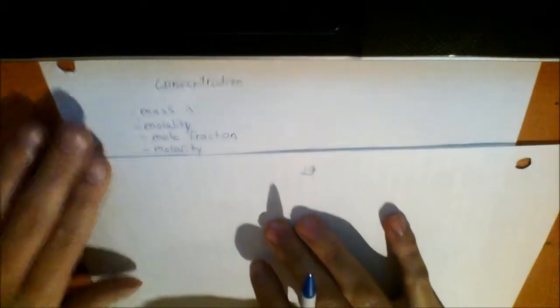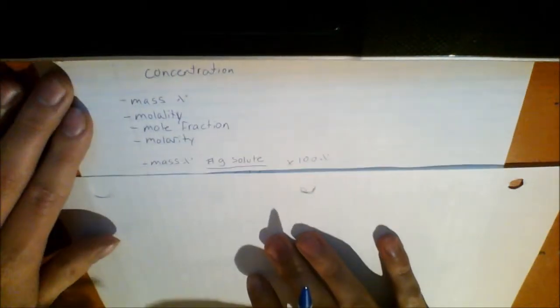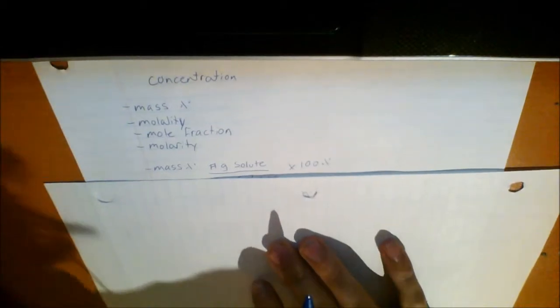Now we're doing concentrations in solutions. There are four different types of concentrations in chemistry: mass percent, molality, mole fraction, and molarity. Mass percent is the grams of a solute divided by the grams of the solution.